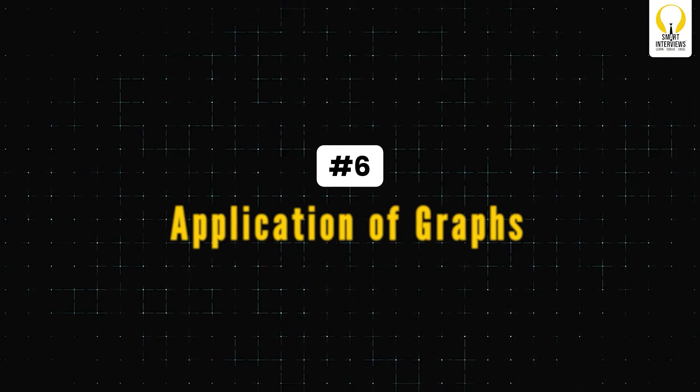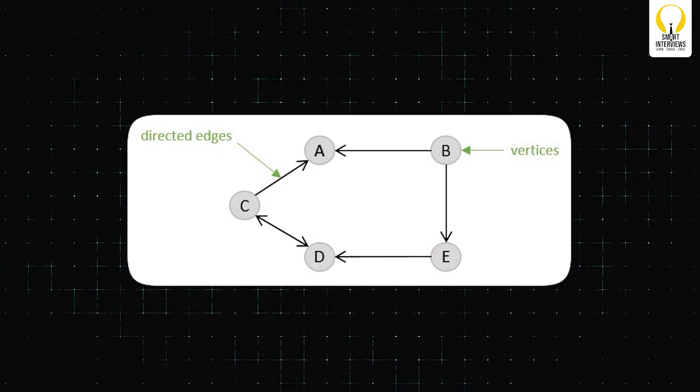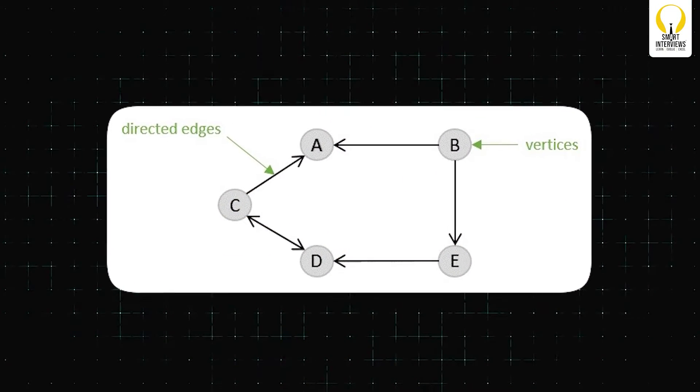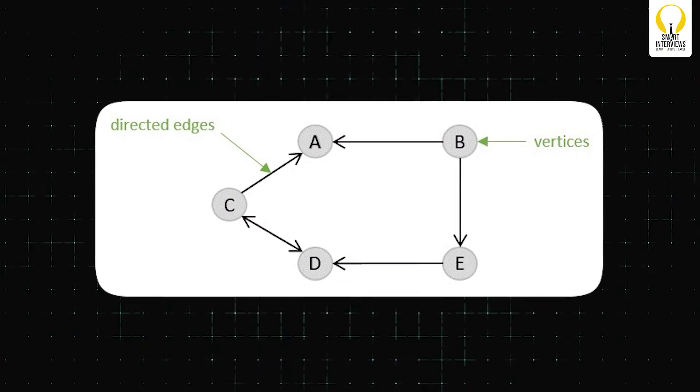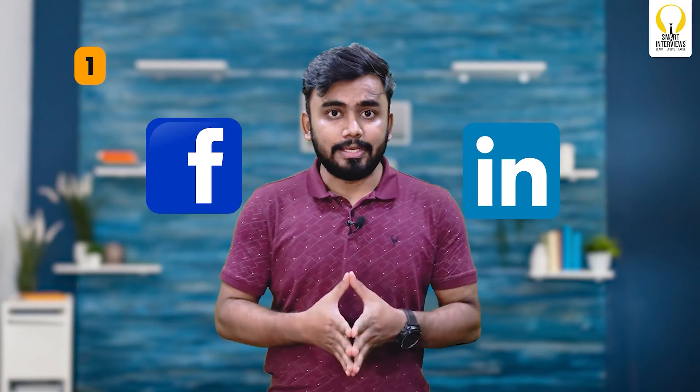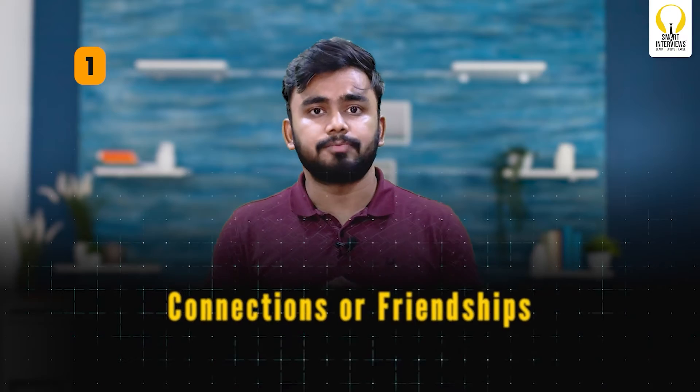A graph is a non-linear data structure where data is stored in a collection of vertices and edges. It is used to solve some of the most complex programming problems. Platforms like Facebook and LinkedIn utilize graphs to represent connections between users — each user is considered a vertex and the edges between them represent connections or friendships.